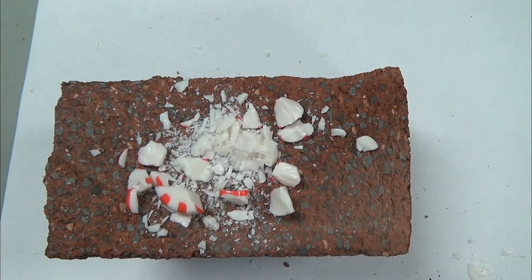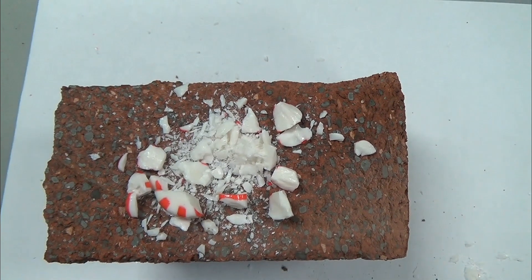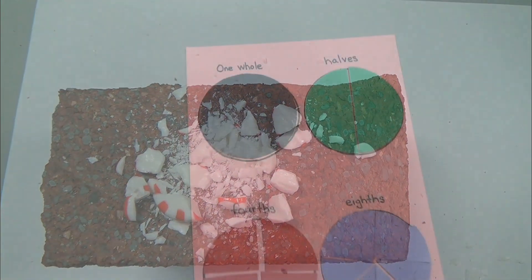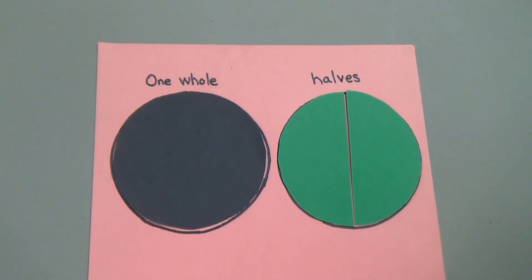A whole object can be broken into a few pieces, or a lot of pieces. Let's look at these circles. What do you notice about them?